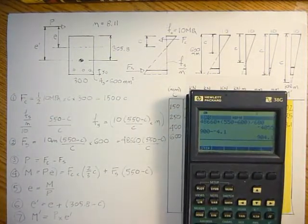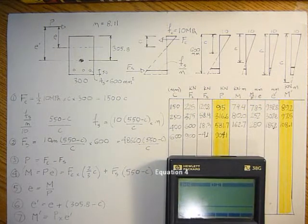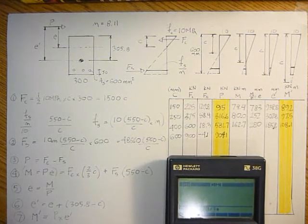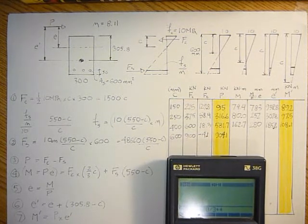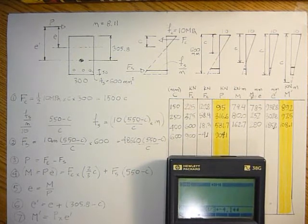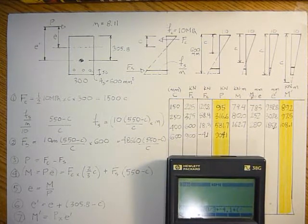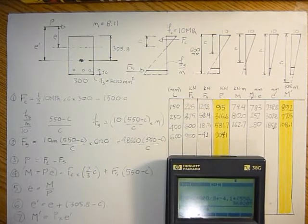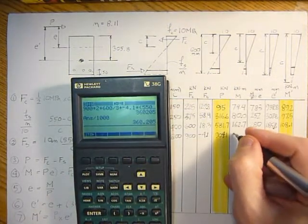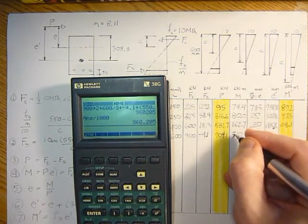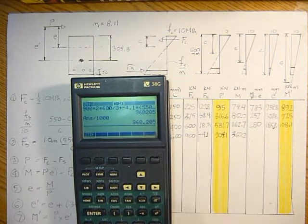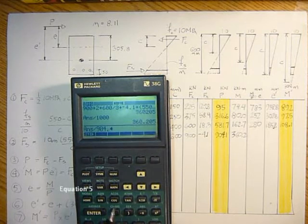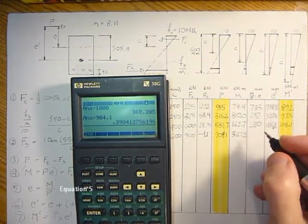And then the moment would be force in the concrete, which is 900 times 2 times 600 divided by 3, plus negative 4.1 times 550 minus 600, and divided by 1000. That's 360.2 kilonewtons meters. And then M divided by P is 360.2 divided by 904.1, that gives me 398 millimeters.